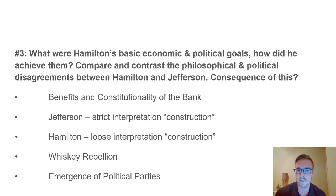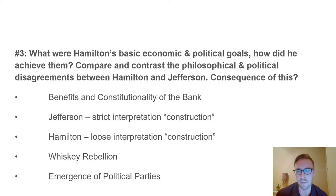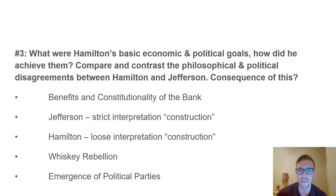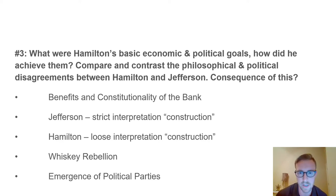This argument became very volatile very quickly. Jefferson said Hamilton was already going way beyond the powers given to the federal government—the Constitution doesn't say you can have a national bank, and the Constitution should be read strictly: if it doesn't say it, you shouldn't do it. This is what we call strict interpretation of the Constitution.